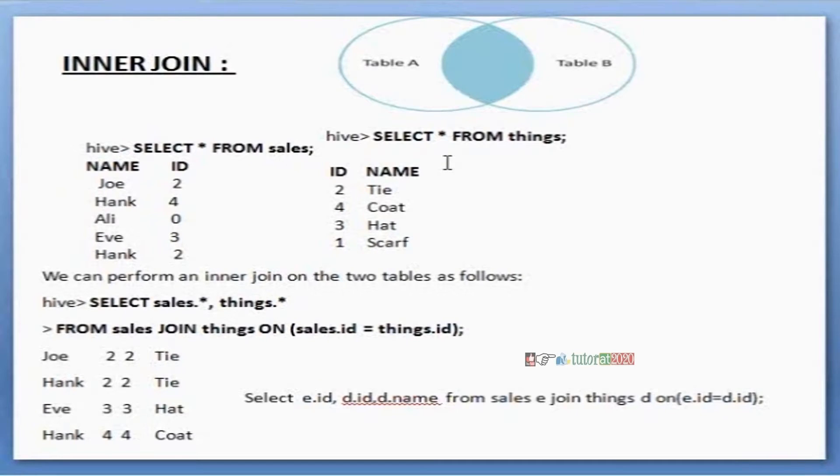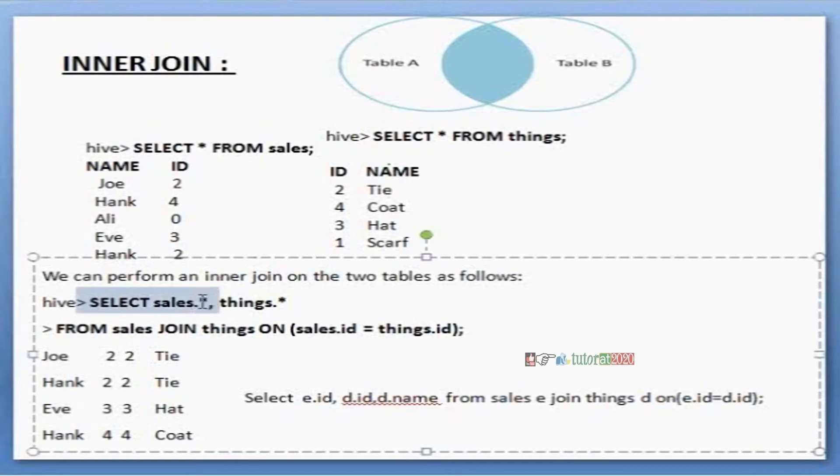For example, table name is sales and the table things. Sales table, things table - two tables are there. Now I'm applying inner join.